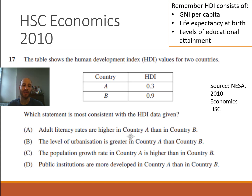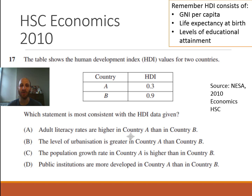Let's look at the answer categories. Option A says adult literacy rates are higher in Country A than in Country B. This is unlikely because literacy relates to education, and given the figures, we would assume Country B would have higher literacy standards. So A is out. Option B says the level of urbanisation — the movement into cities — is greater in Country A than Country B. We know that when countries develop, they move away from the countryside and agriculture and into cities and factories, so urbanisation would be higher in Country B. So B is not correct. Option D says public institutions are more developed in Country A than in Country B. We know public institutions are more likely stronger and more reliable in a country with higher economic development, so public institutions would be more developed in Country B.